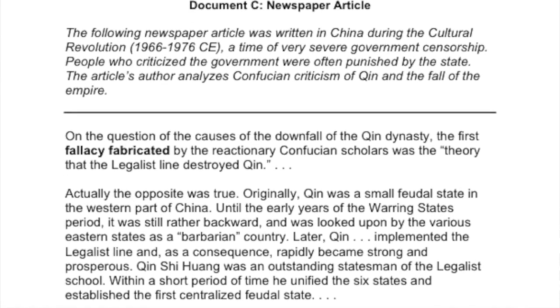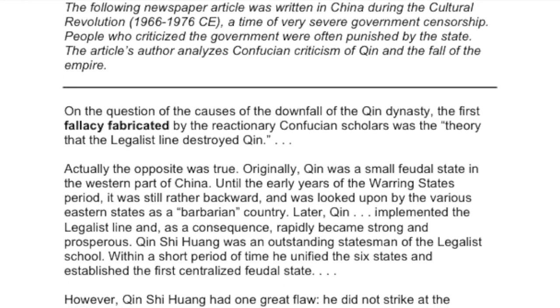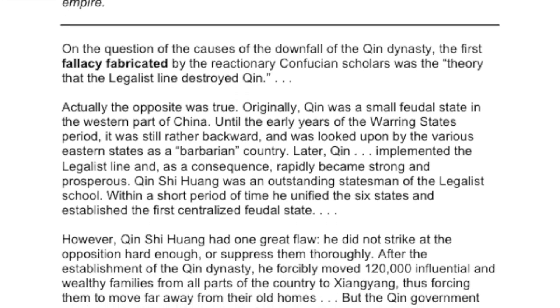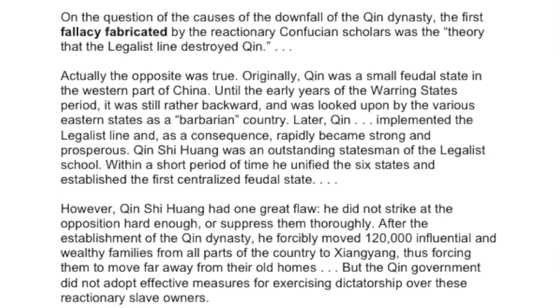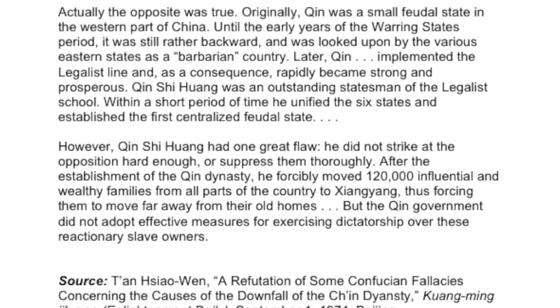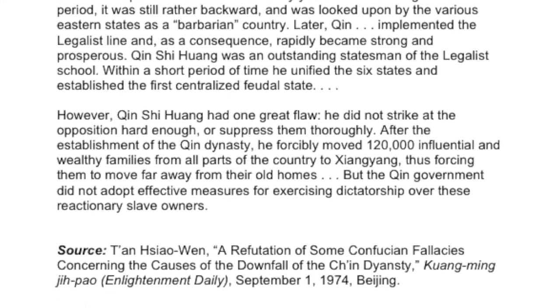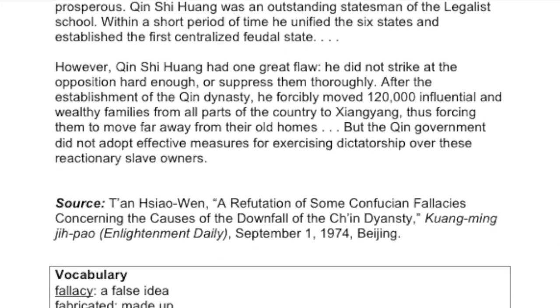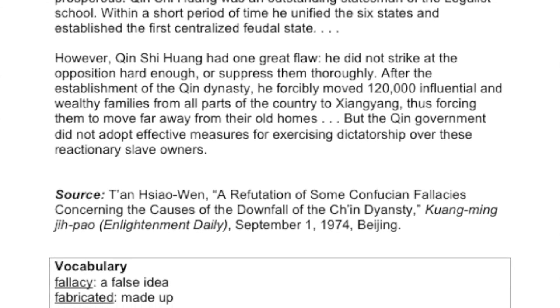Actually, the opposite was true. Originally, Qin was a small feudal state in the western part of China. Until the early years of the Warring States period, it was rather backward and looked upon by the eastern states as a barbarian country. Later, Qin implemented the legalist line and as a consequence rapidly became strong and prosperous. Qin Shi Huang was an outstanding statesman of the legalist school. Within a short period of time, he unified the six states and established the first centralized feudal state. All that paragraph does is say Qin Shi Huangdi was great — he unified China out of the chaos of the warring states. So that's not why it fell.